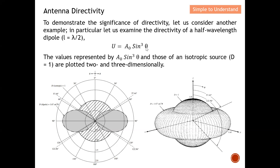Next, let's examine sin³θ and the directivity of a half-wavelength dipole. In the diagram, A₀·sinθ is compared against an isotropic source. The shaded region represents the isotropic source, which receives power evenly in all directions. You can clearly see that the maximum radiation intensity point for the dipole is much larger compared to the average, confirming higher directivity.